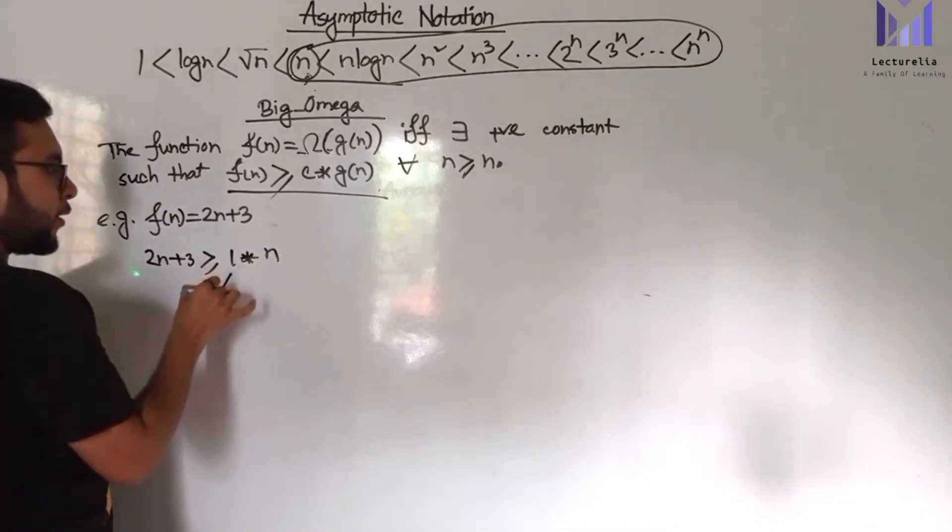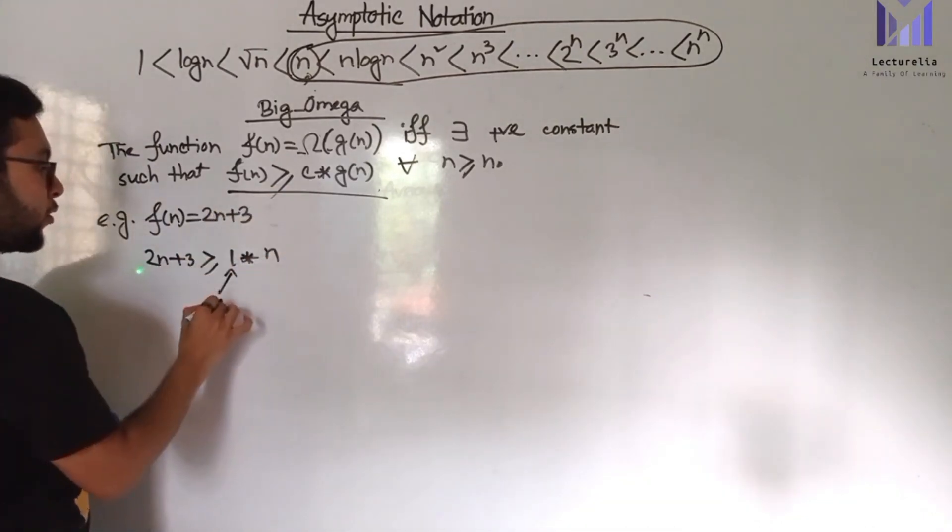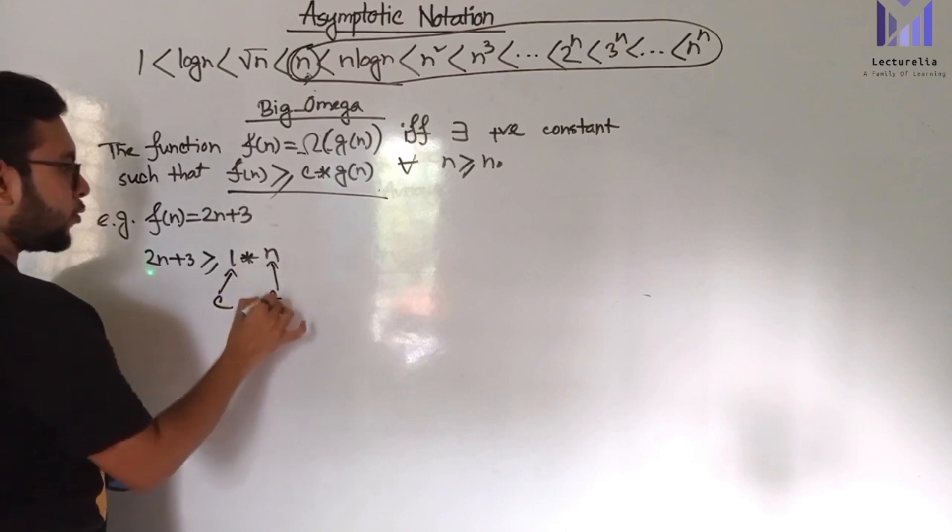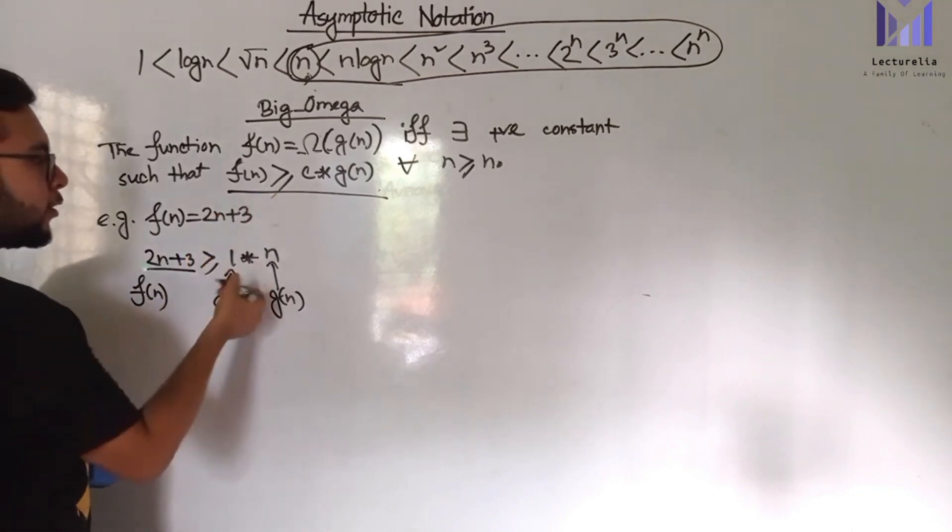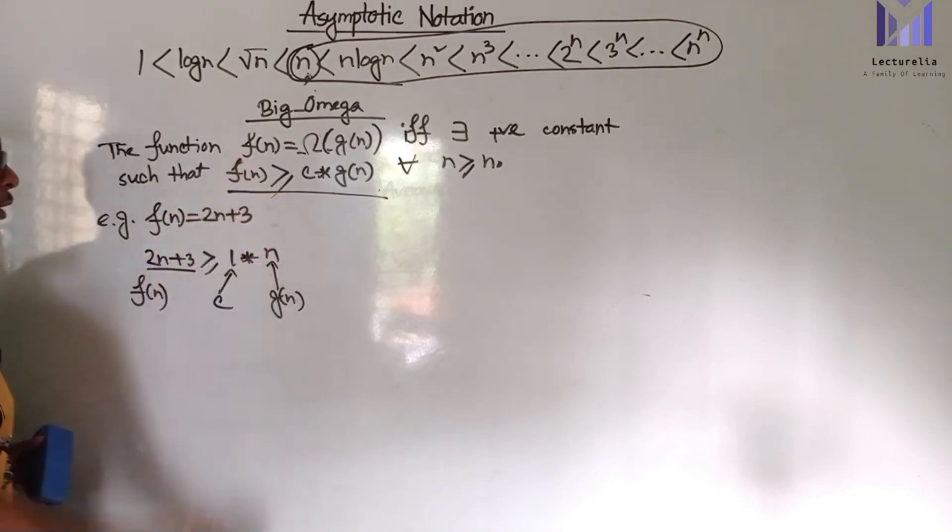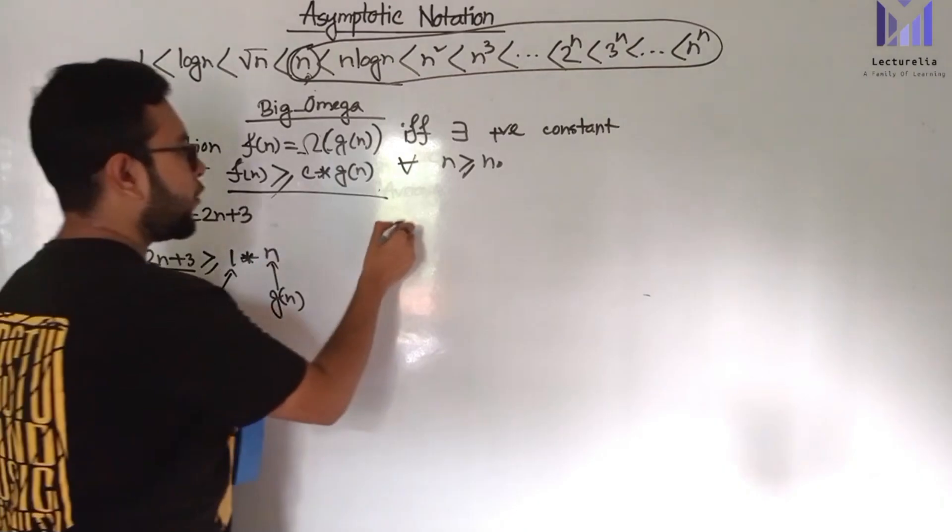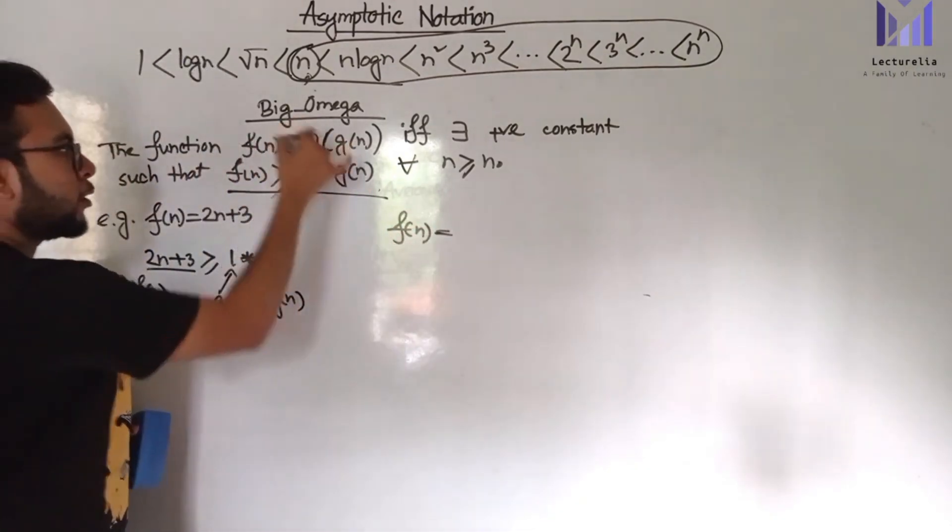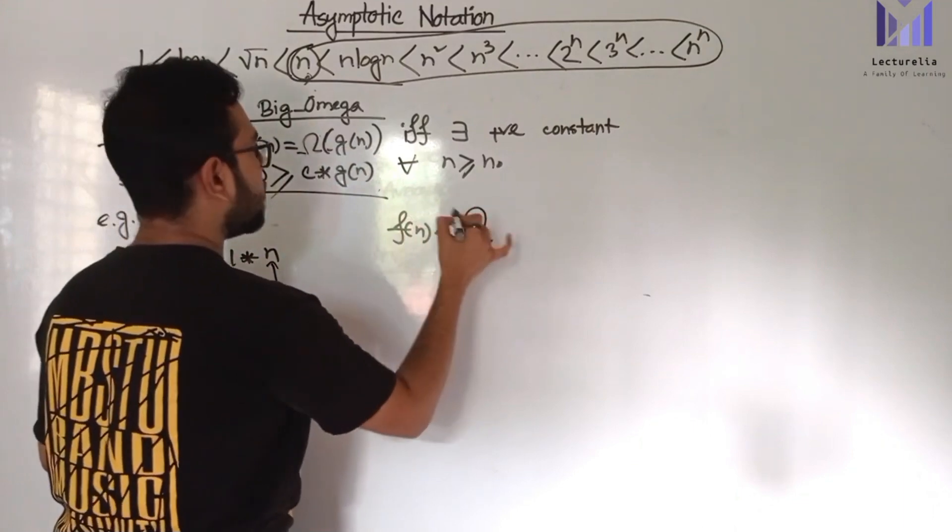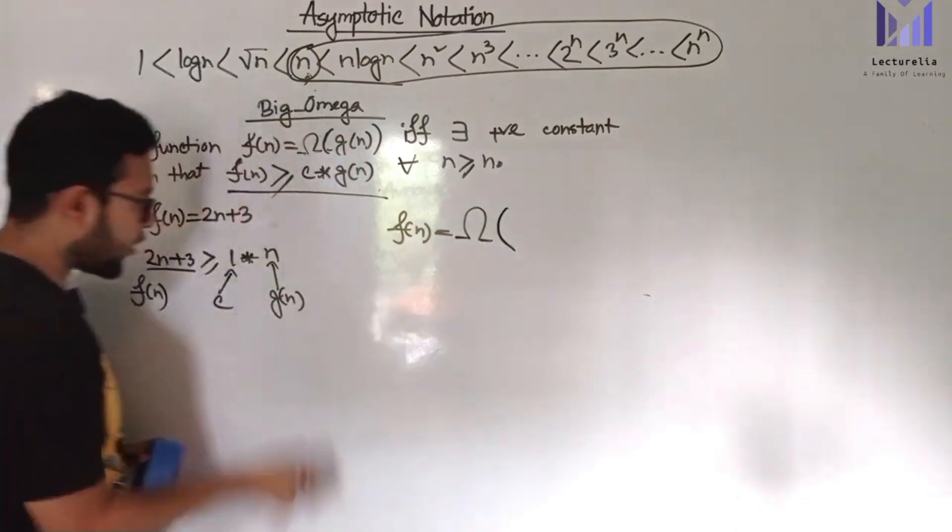Here c is 1 and g(n) is n. The function of n is greater than or equal to c into g(n), which matches. Therefore, we can say function of n is Omega of g(n), that is, Big Omega of g(n).